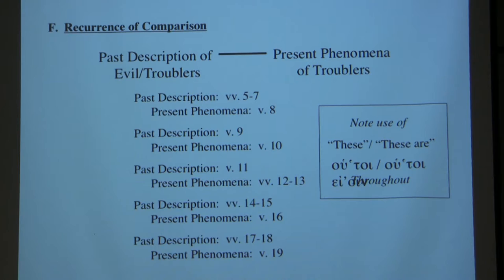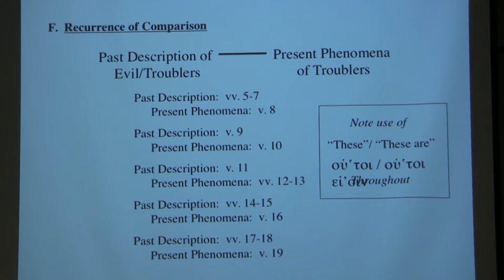He does the same thing in verses 9 and 10. Past description: 'But when the archangel Michael, contending with the devil, disputed about the body of Moses, he did not presume to pronounce a reviling judgment upon him, but said, the Lord rebuke you.' Now present phenomena: 'But these men revile whatever they do not understand, and by those things that they know by instinct, as irrational animals do, they are destroyed.' Again in verse 11: 'Woe to them, for they walk in the way of Cain, and abandon themselves for the sake of gain to Balaam's error, and perish in Korah's rebellion.' That's past description.